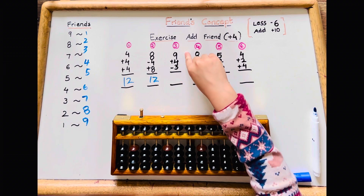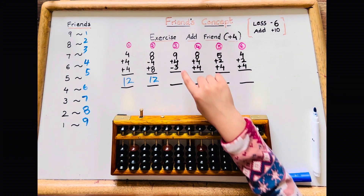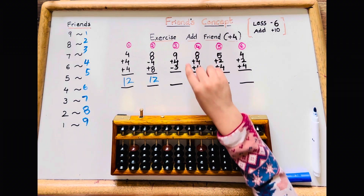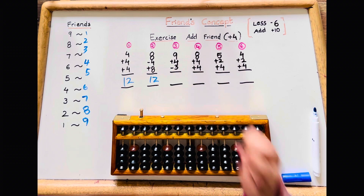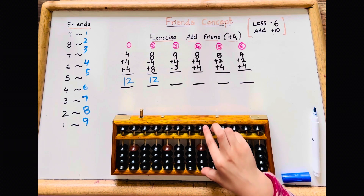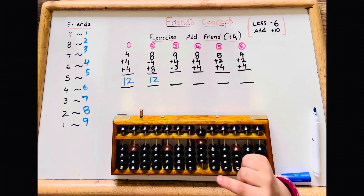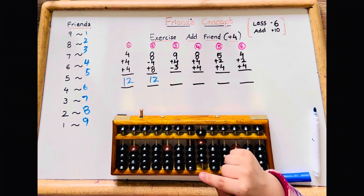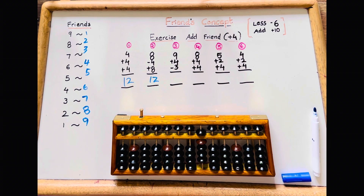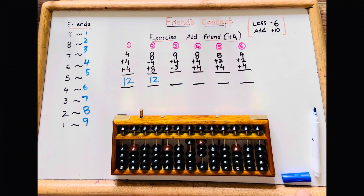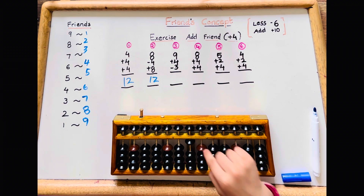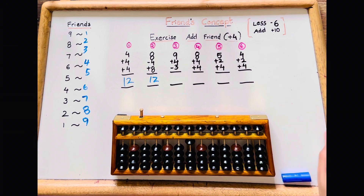Let's do the third sum: 9 plus 4 minus 3. 9 plus 4 — there's no plus 4, so minus 6 add 10. Then 10 minus 3. The answer is 10.